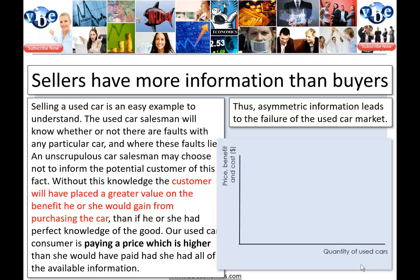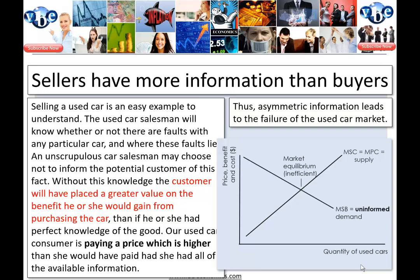On the diagram: price, benefit, and cost on the y-axis; quantity of used cars on the x-axis. Marginal social cost equals marginal private cost equals supply. Marginal social benefit equals uninformed demand — this is the market equilibrium, and it is inefficient. If the buyer knows everything about the used car, the marginal social benefit shifts downwards and to the left, reflecting informed demand. The socially optimal equilibrium is where MSB equals MSC with informed demand.